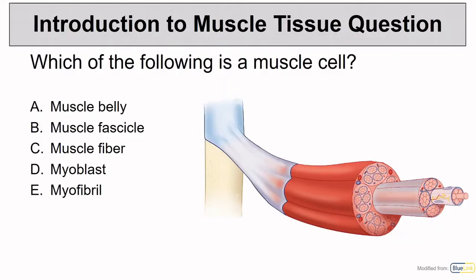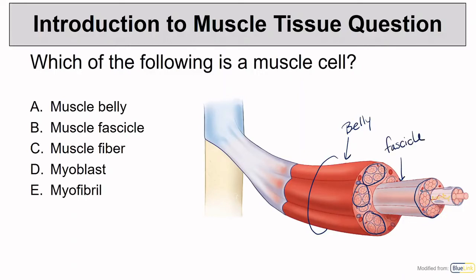A muscle belly is what we can see gross anatomically, and a belly is made up of multiple fascicles. Those fascicles are a combination of muscle cells, also called muscle fibers. Myoblasts are those that fuse together to form muscle fibers, and myofibrils are the parts that make up one muscle fiber. Thank you for your attention, and I will see you in the next video.